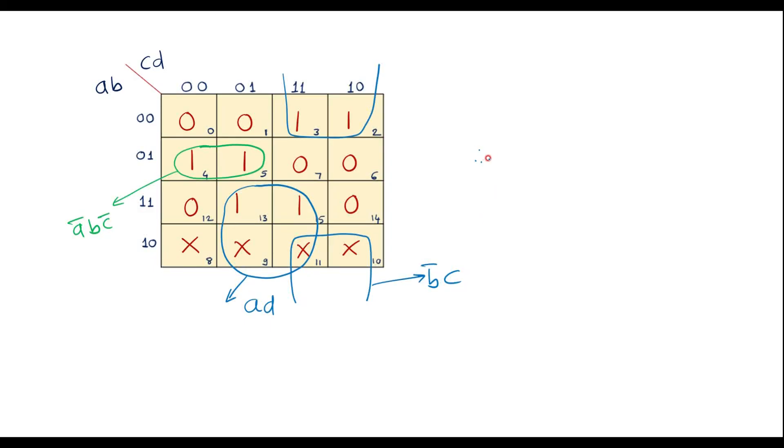Therefore, the simplified expression is f of a b c d equals a d plus b bar c plus a bar b c bar. This is the simplified expression.